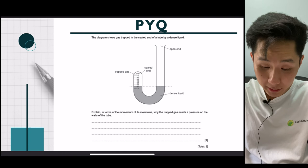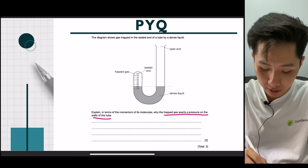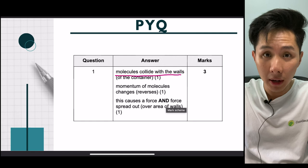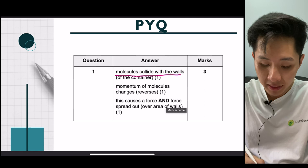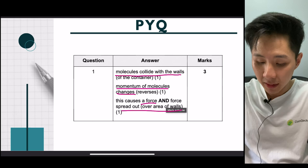Essay question: explain in terms of momentum why trapped air gas exerts pressure on the wall. The air molecules collide with the wall, and the direction of their momentum changes. This change in momentum results in a force on the wall. The force spread over the wall creates pressure.